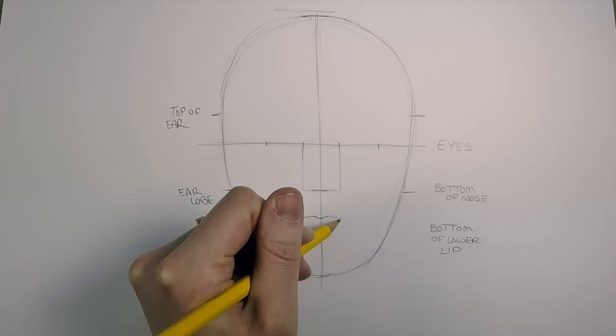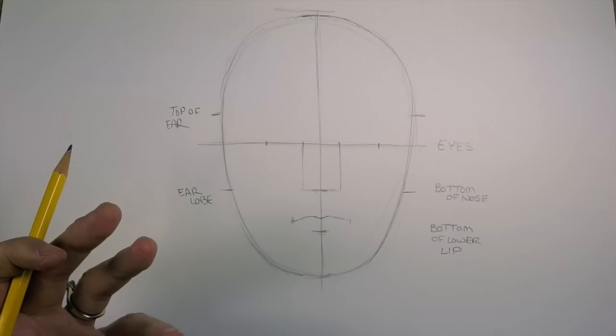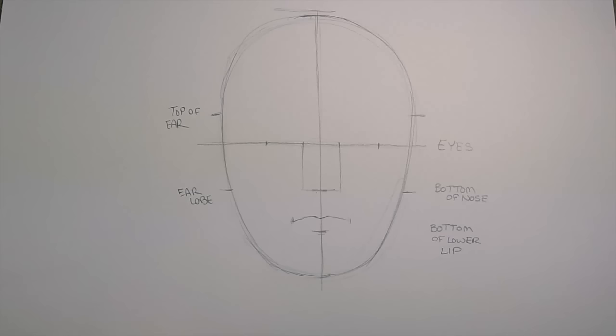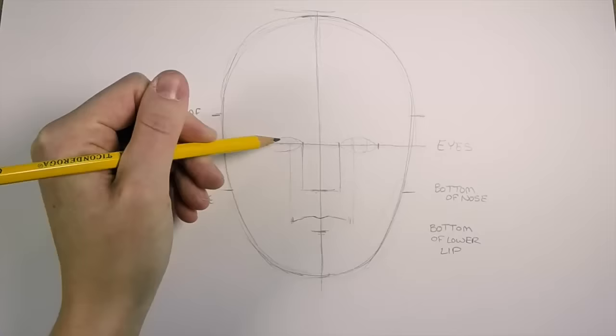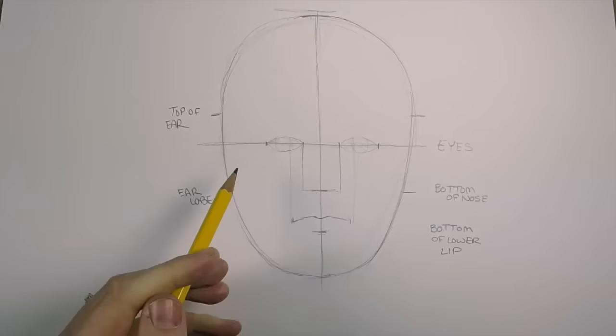This just depends on your own features. For example, I have kind of a small mouth, so my mouth lines up with the inside edge of the iris. Obviously, if you're smiling or making an angry face, the size of your mouth is going to change.